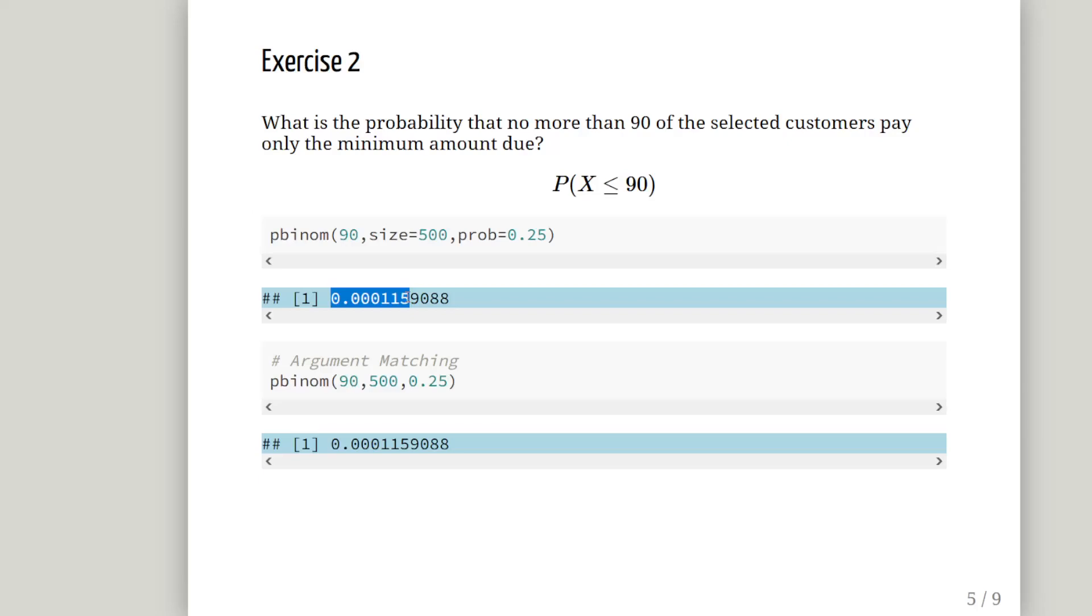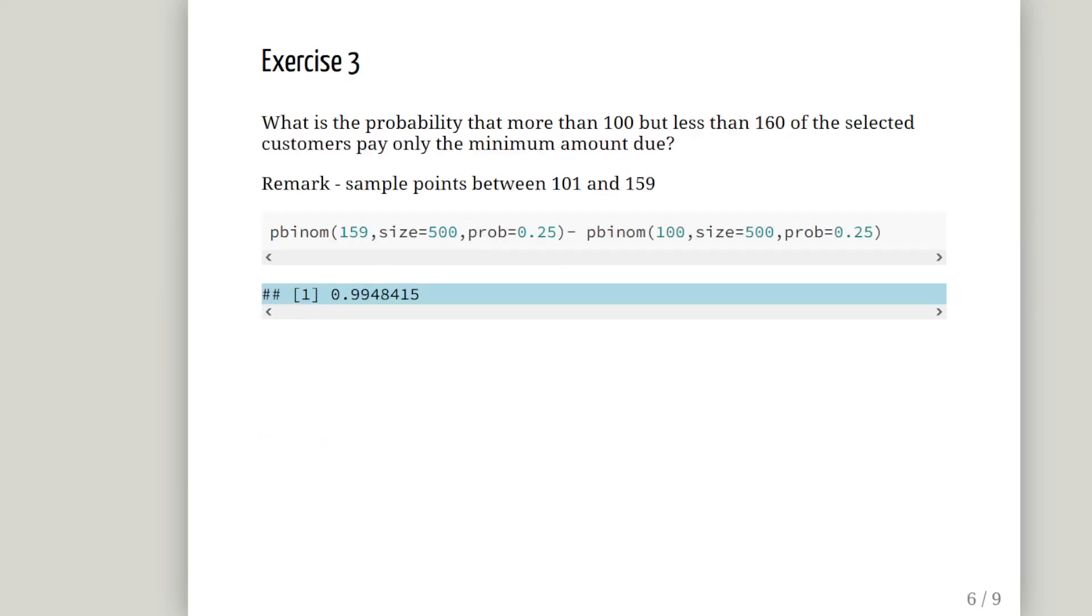Just a remark on argument matching. You notice here that I have pbinom 90, 500, and 0.25. I don't specify size equals or prob equals. When I leave them out, the locations indicate to R what this value means. So argument matching is that the second item should correspond to size and the third item should correspond to probability. You don't actually necessarily have to write them in. I think it is a good idea to write them in, but it's not absolutely necessary.